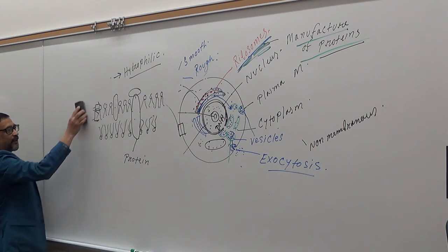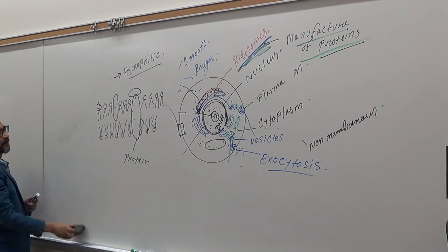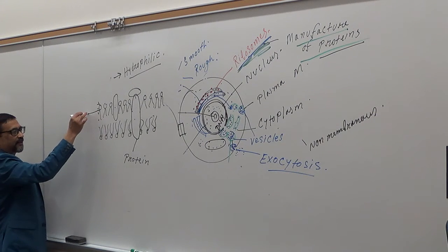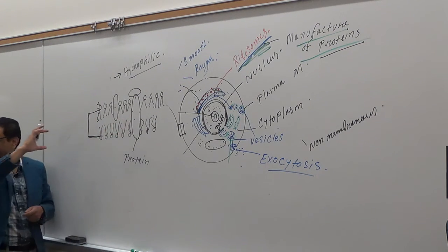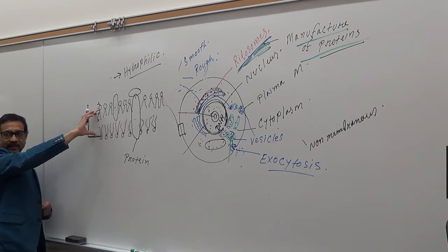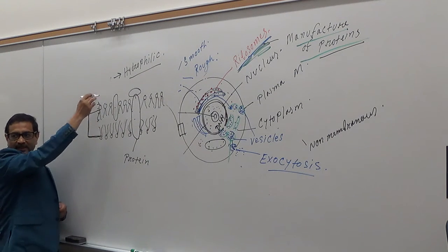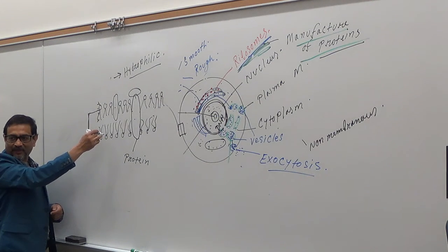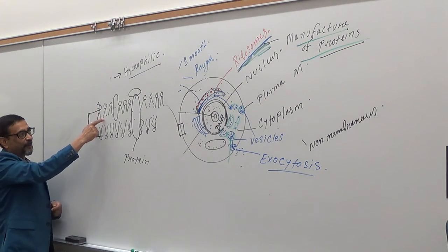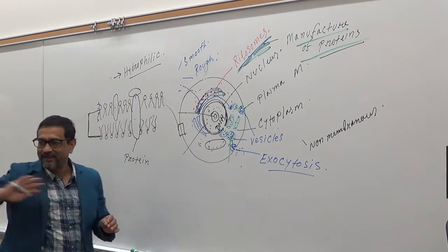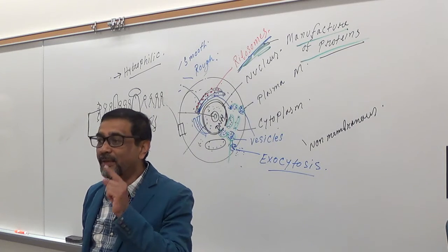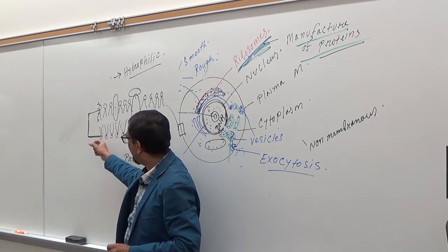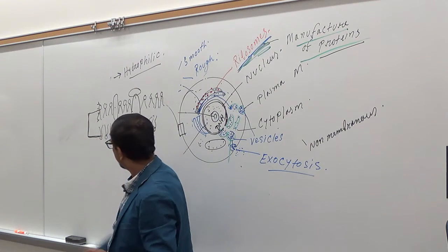The entire middle portion of the bilayer contains only the tails, so this part is water-disliking — hydrophobic. That's why the cell membrane will not let water pass through it; water cannot pass through this hydrophobic region. But lipid molecules will be able to pass through it because lipids are not water-soluble.